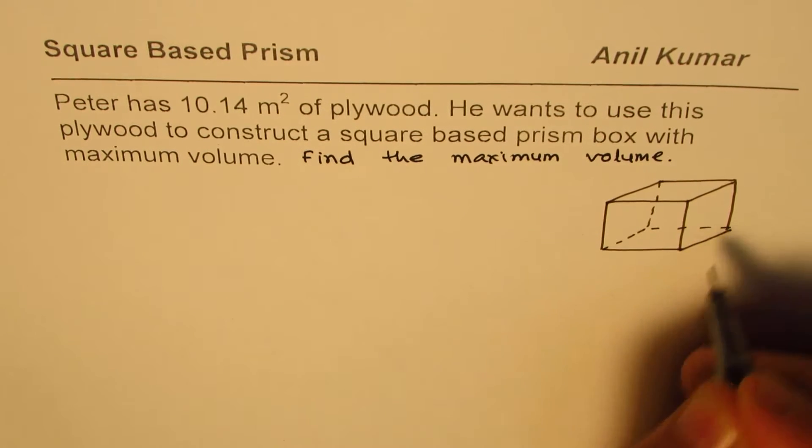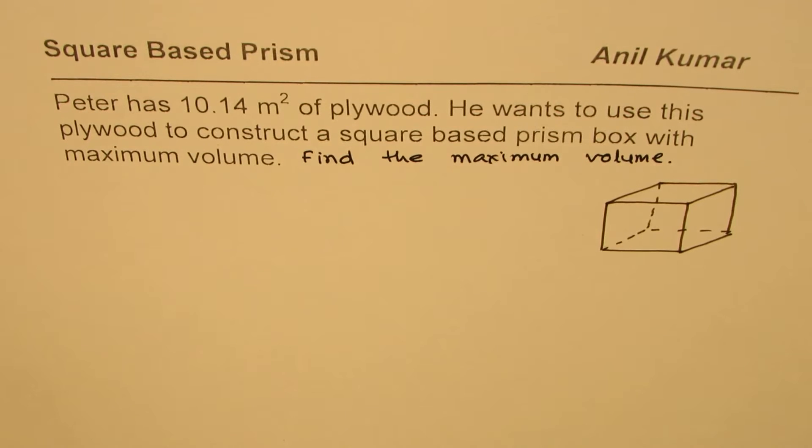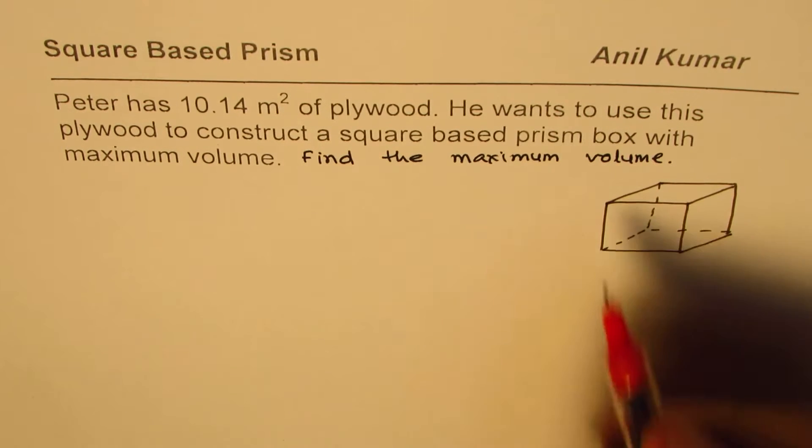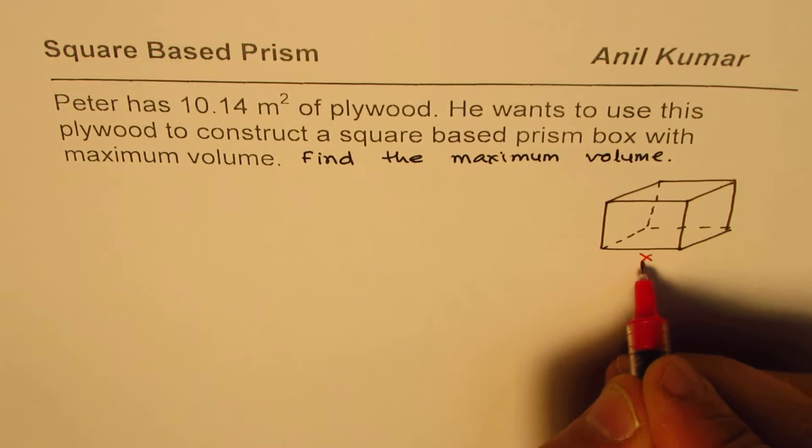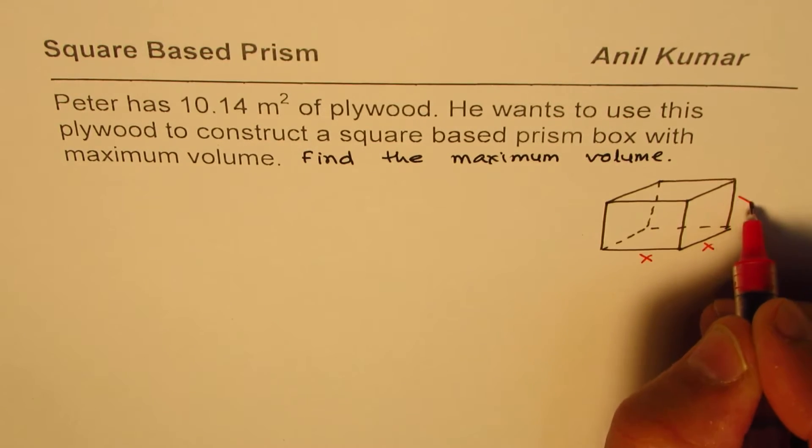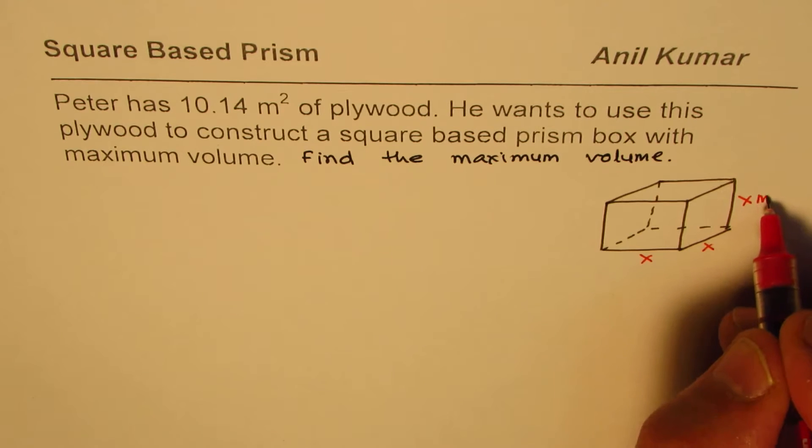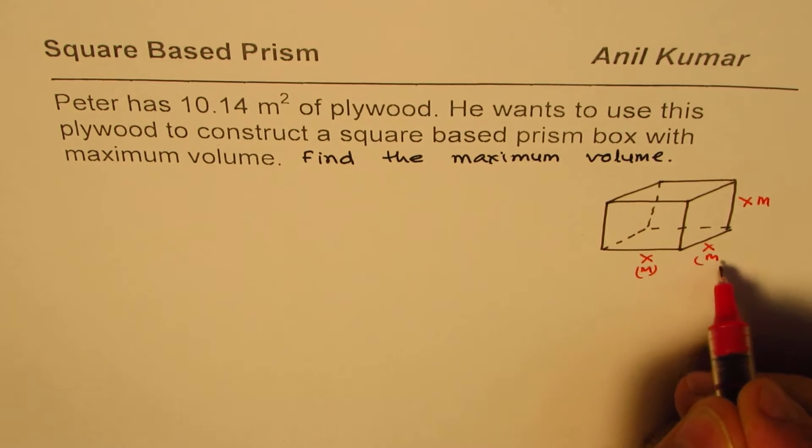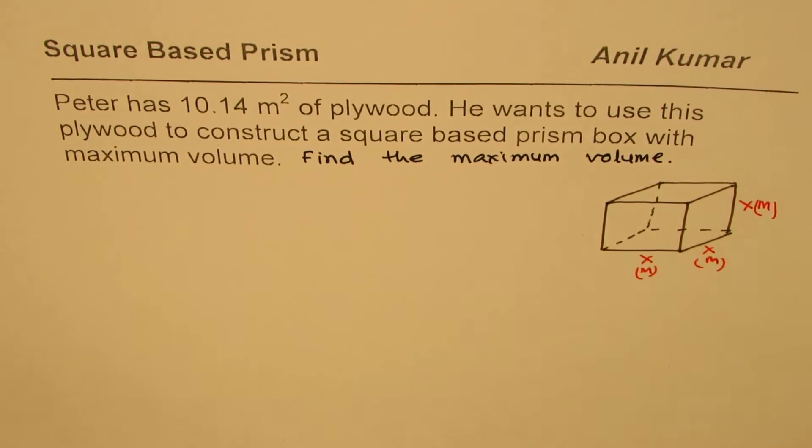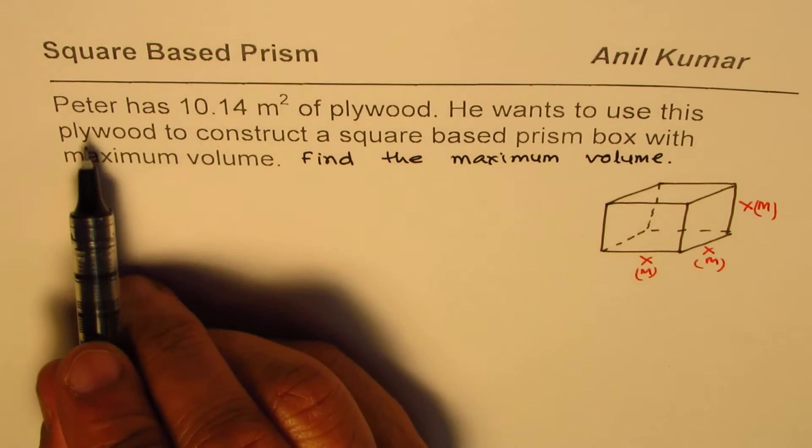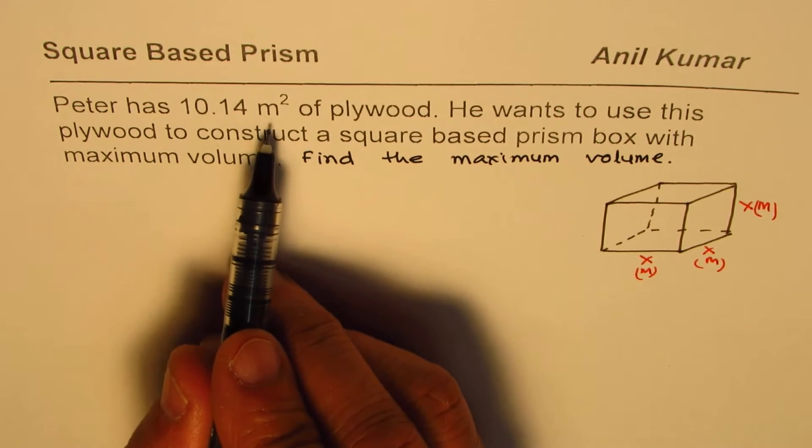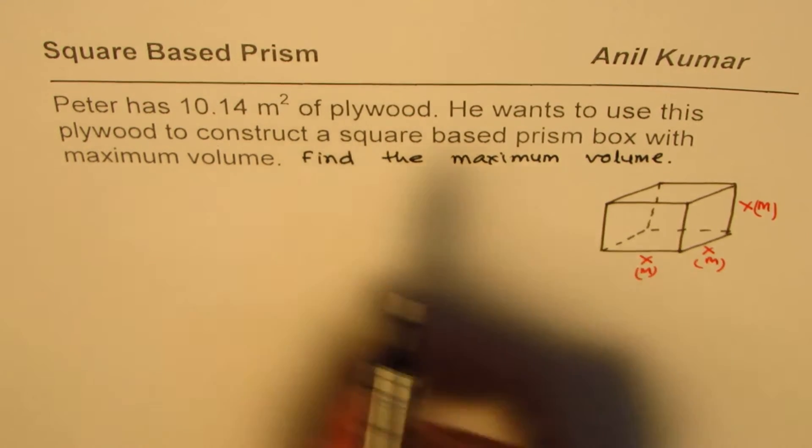Let the dimensions be X, X, and X. Units are meters, so we'll put X meters, X meters, and X meters. We are given that Peter has 10.14 square meters of plywood.